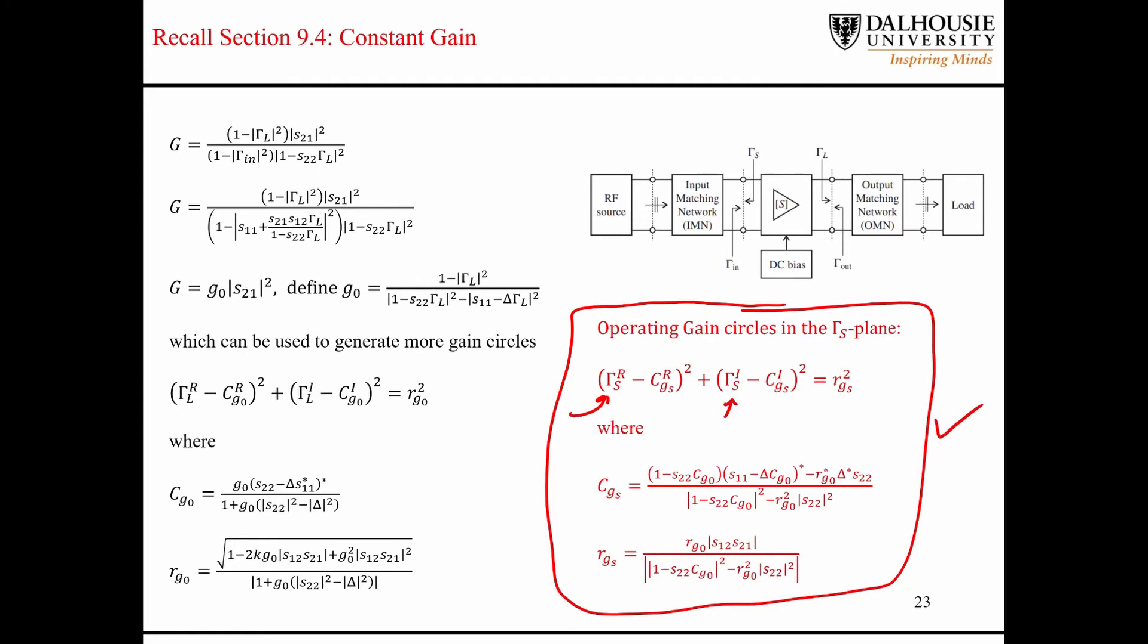Unfortunately, in QUCS and QUCS Studio, there's no way, unless you do it manually, to plot the operating power gain circles in the gamma s plane. But the Python scripts that I gave you a week or two ago do map the operating power gain circles from the gamma l plane to the gamma s plane. You can use those Python scripts if you need them, or you can take a look to see how that was done.